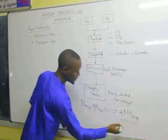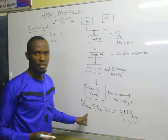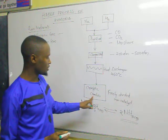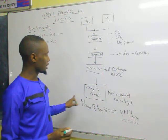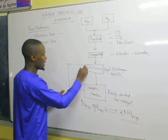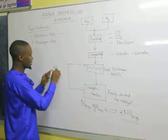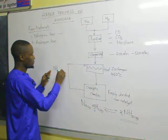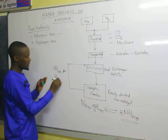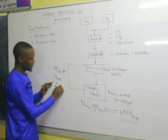Ammonia is formed as a gas in this chamber, but we also have unreacted nitrogen and hydrogen. If they did not react, they will be recycled — taken back to the heat exchanger. So we have ammonia gas formed, plus unreacted hydrogen gas, plus unreacted nitrogen gas.